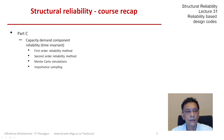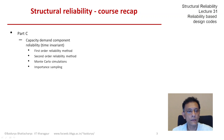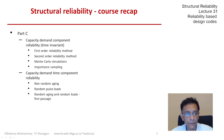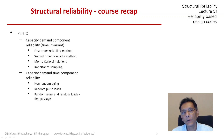We looked first at time-invariant problems, and in that context we discussed the first order reliability method (FORM), the second order reliability method (SORM), Monte Carlo simulations, and importance sampling simulations for estimating component reliability. And then we introduced the time aspect first in a non-random way, where the capacity and demand — or in general the basic variables — change with time but in a non-random way.